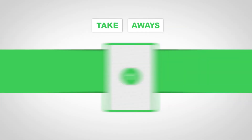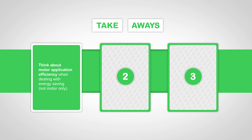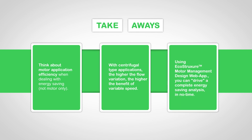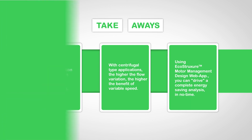Let's keep in mind: when dealing with energy saving, consider the motor application efficiency — do not limit it to motor efficiency only. With centrifugal-type applications, the higher the flow variation is, the higher the benefit of a variable speed drive will be. By using EcoStruxure Motor Management Design web app, you can drive a complete energy analysis in no time.